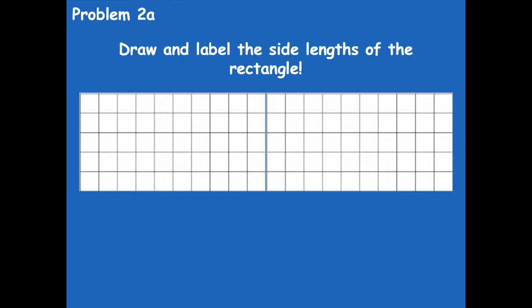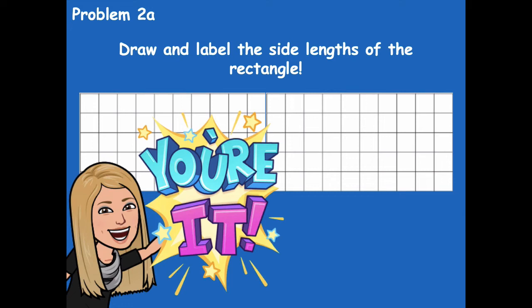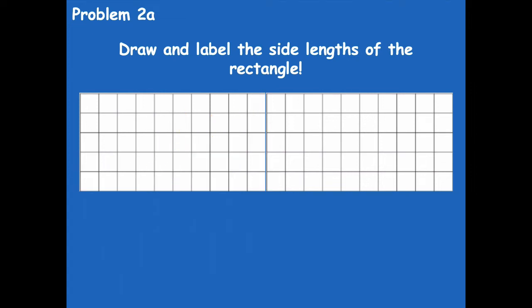Draw and label the side lengths of this rectangle for problem 2A on your problem set. Remember, it doesn't have to be perfect — don't draw in your grid lines, just count what the side lengths are and give a rectangle that models about that size. Pause the video, do that, and click play when you're ready for the next step. The side lengths are 20 centimeters and 5 centimeters.